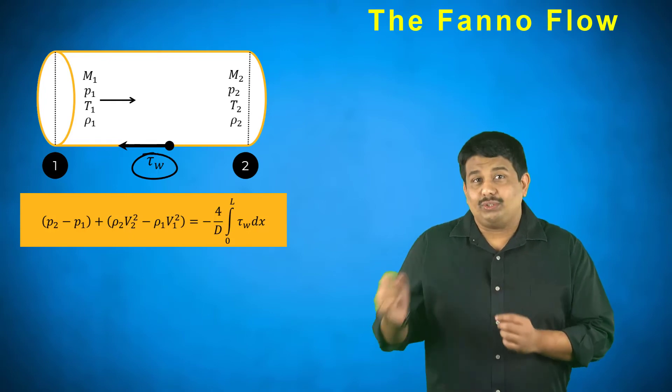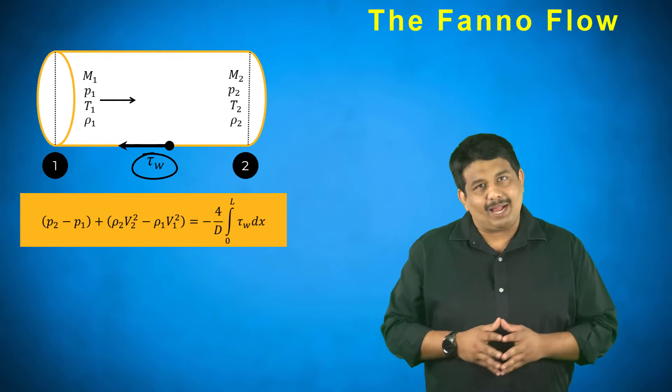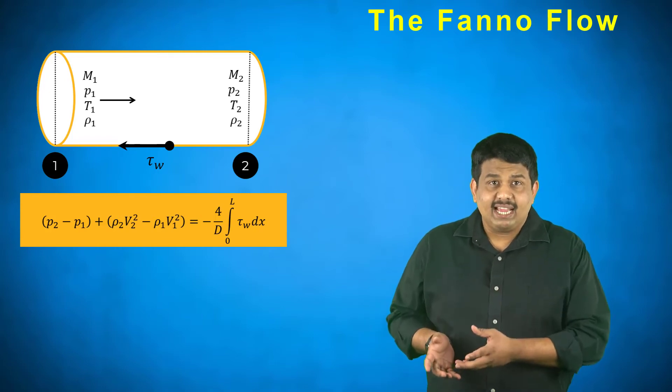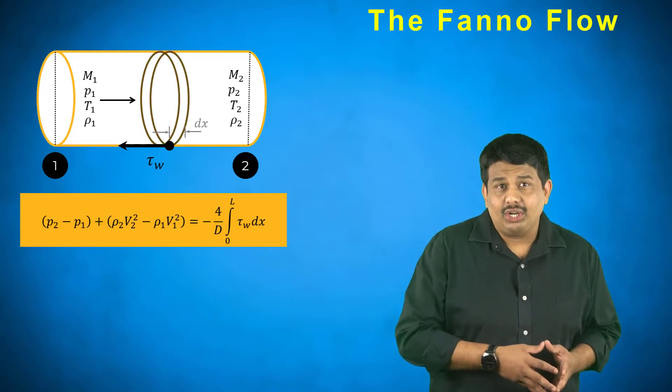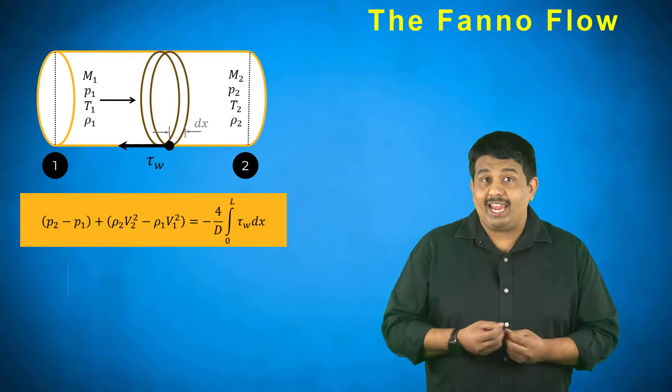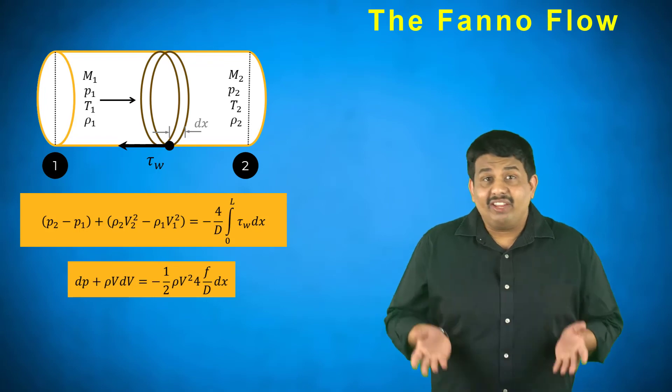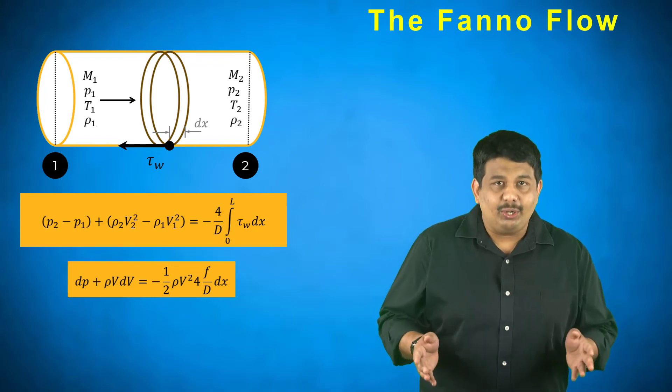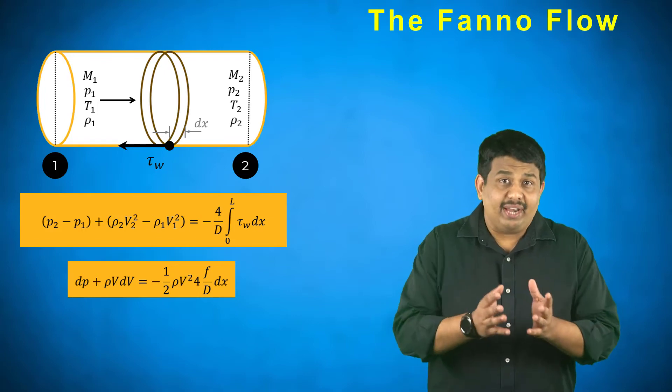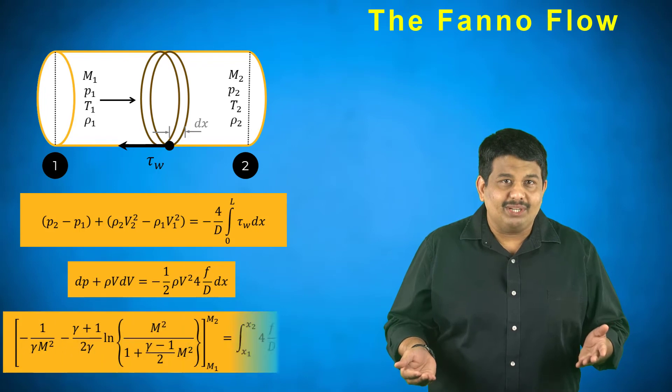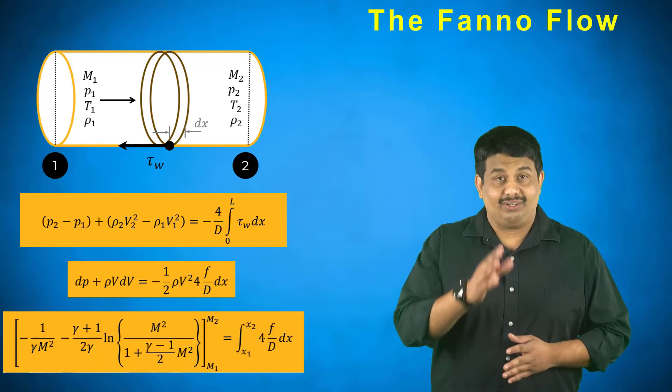Here the shear stress varies with the distance of the pipe. If we take a small length dx and express the definition of shear stress in terms of friction factor, we obtain the following equation. We can now integrate this equation between points 1 and 2 and obtain a relationship between the upstream and downstream Mach numbers with the friction factor in the pipe.